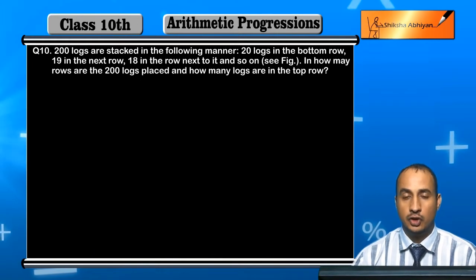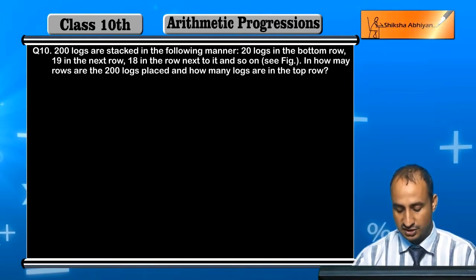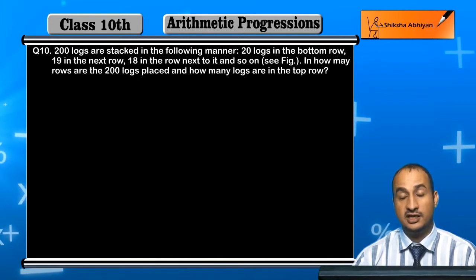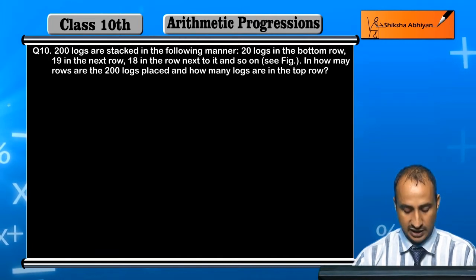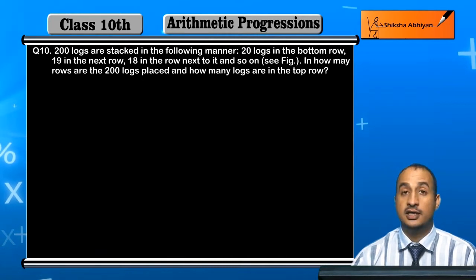200 logs in the bottom row, then 19 in the next row, 18 in the row next to it and so on, as you can see in figure. We need to find: in how many rows are the 200 logs placed?